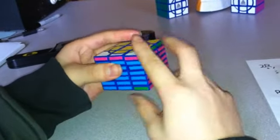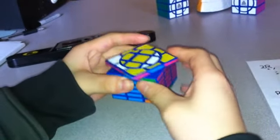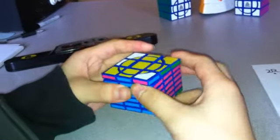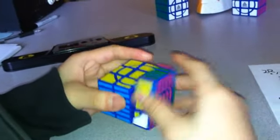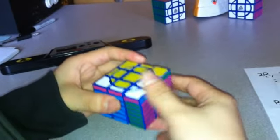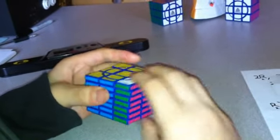From here, it's R, U, R, U, R, 2U, R, 2U, R, U, R, U inverted, and R.